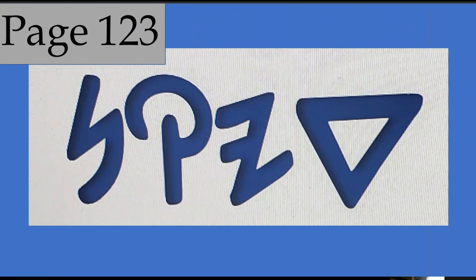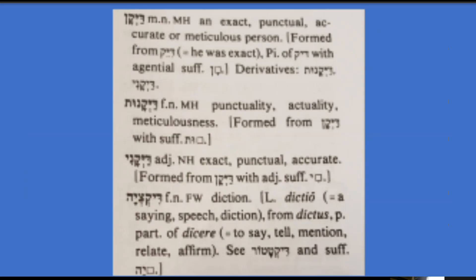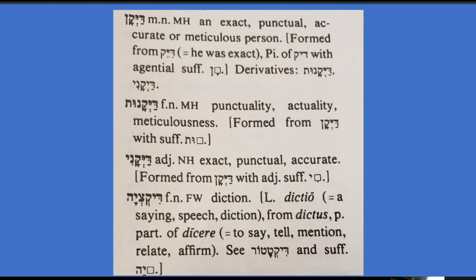Also on page 123, Dalit-Yod-Kuf-Nun is defined as an exact, punctual, accurate, or meticulous person. He was exact. Adding a Waw-Tav gives punctuality, actuality, meticulousness. With a Nun-Yod at the end it's exact, punctual, accurate. And with a Zadi-Yod-He, it's diction, saying, speech — to say, tell, mention, relate, affirm.